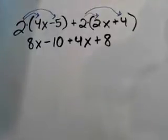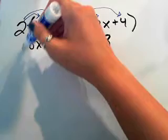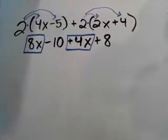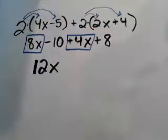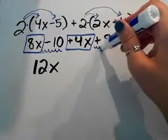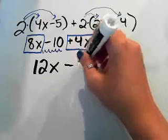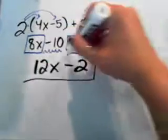And so now we'll look for our like terms and we'll do something to identify them to ourselves. So we have an 8x here and a 4x here. So if I get those 2 like terms together, I have 12x. And then my constants, I have a negative 10 and a positive 8. So negative 10 plus 8. The negative is the bigger one, so I know it's going to be negative. Negative 10 and 8 gives me negative 2. So 12x minus 2.